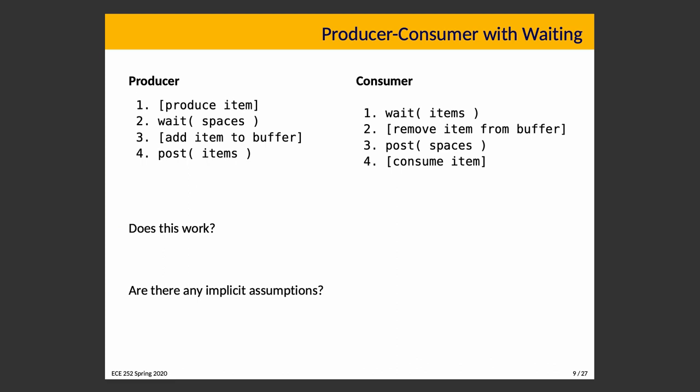Producer-Consumer with waiting: the producer produces an item, waits on the semaphore 'spaces', adds an item to the buffer, then posts on the 'items' semaphore indicating there is now an item. The consumer waits for there to be items, removes an item from the buffer, posts on 'spaces', and then consumes the item.